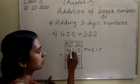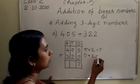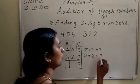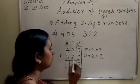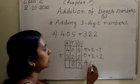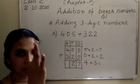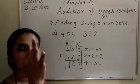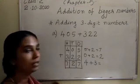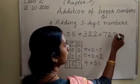Next, the 10's place: 0 plus 2. What is 0 plus 2? It is 2. Write it in the 10's place. Then add the 100's place: 4 plus 3. What is 4 plus 3? 4 in your mind, 3 fingers after 4 — 5, 6, 7. So the sum is 727.